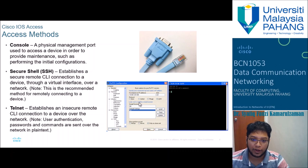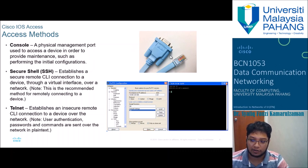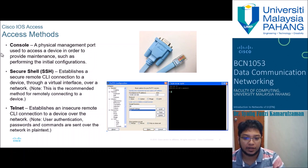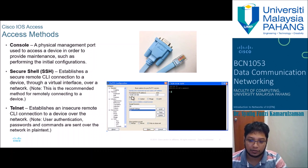When you want to access a Cisco device, there are three methods involved. The first is using a console, which is a physical management port used to access a device in order to provide maintenance such as performing initial configurations. The second is secure shell, which establishes a secure remote command line interface connection to a device through a virtual interface over a network. This is the recommended method for remotely connecting to a device, typically using a third-party application to access any IP address computer.